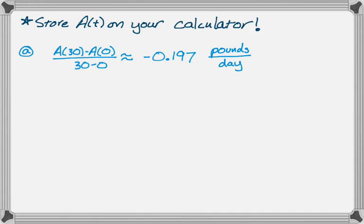The next part is to find A prime of 15. That's just pressing buttons. You're always allowed to find numerical derivatives on your calculator, so you just punch it in. I get A prime of 15 is approximately negative 0.164 pounds per day.